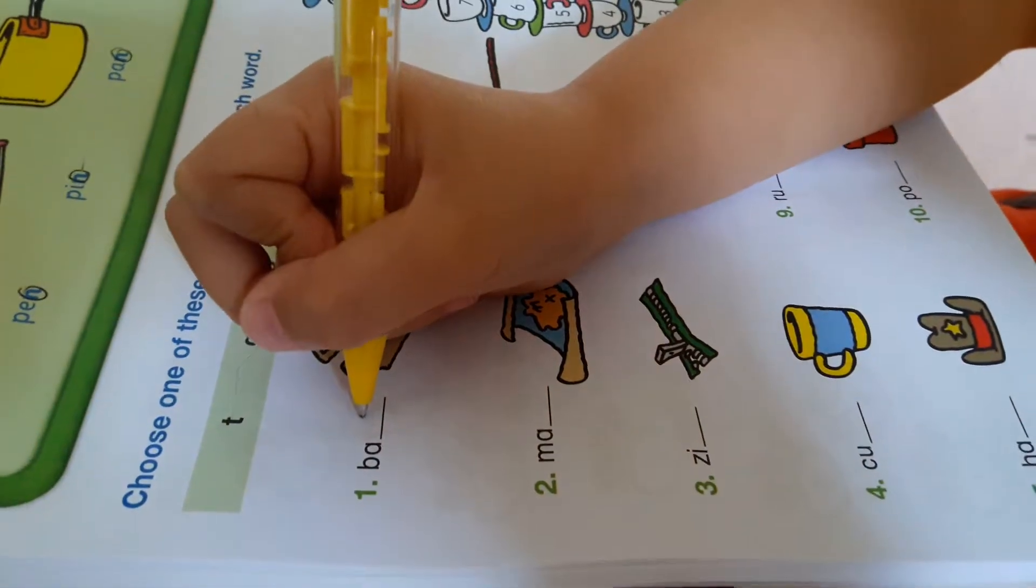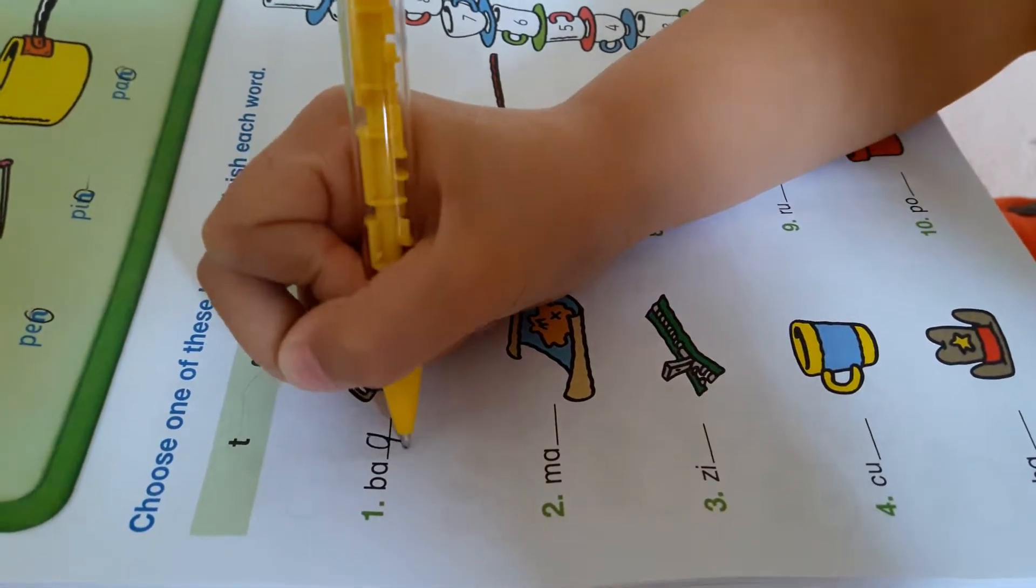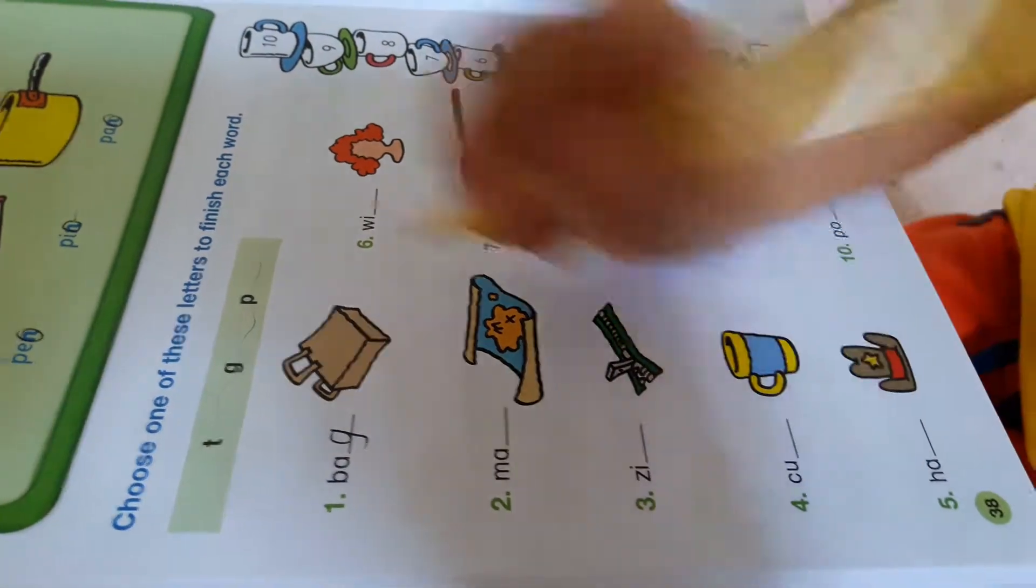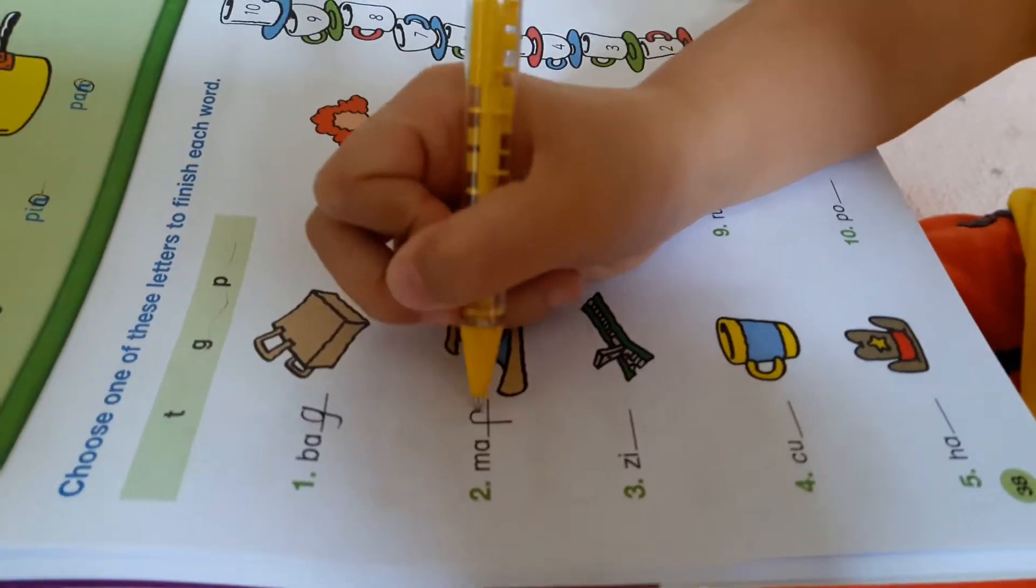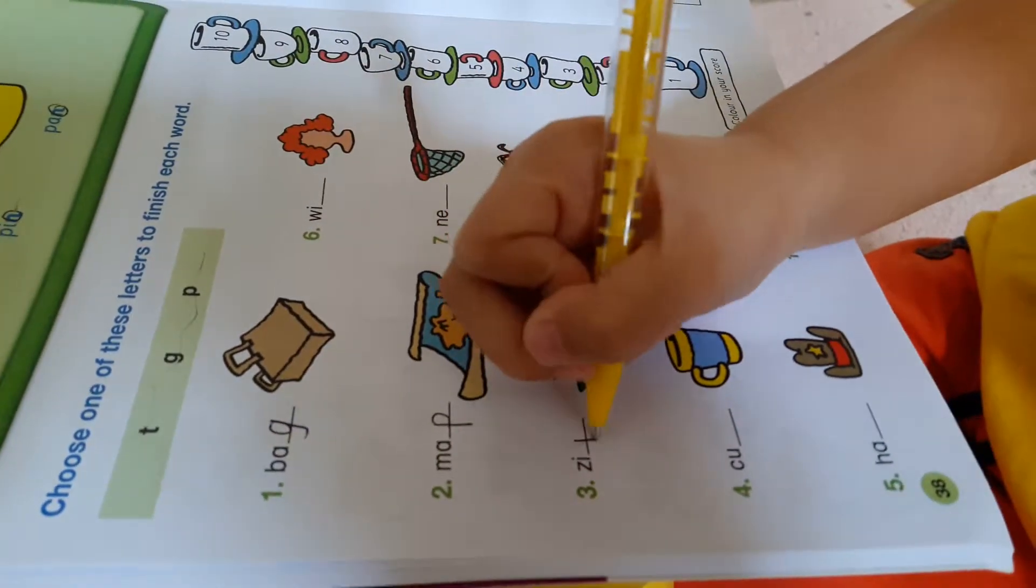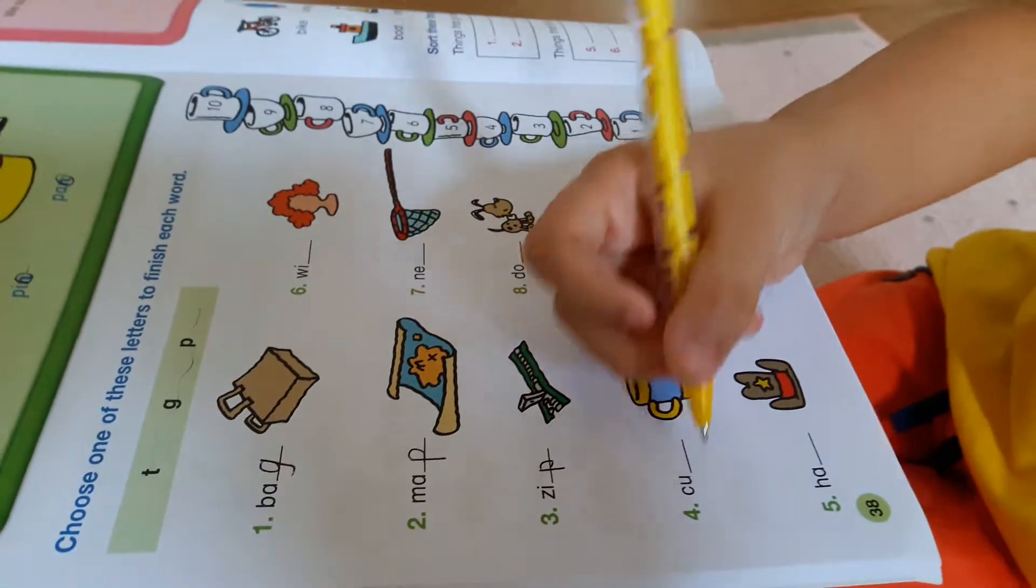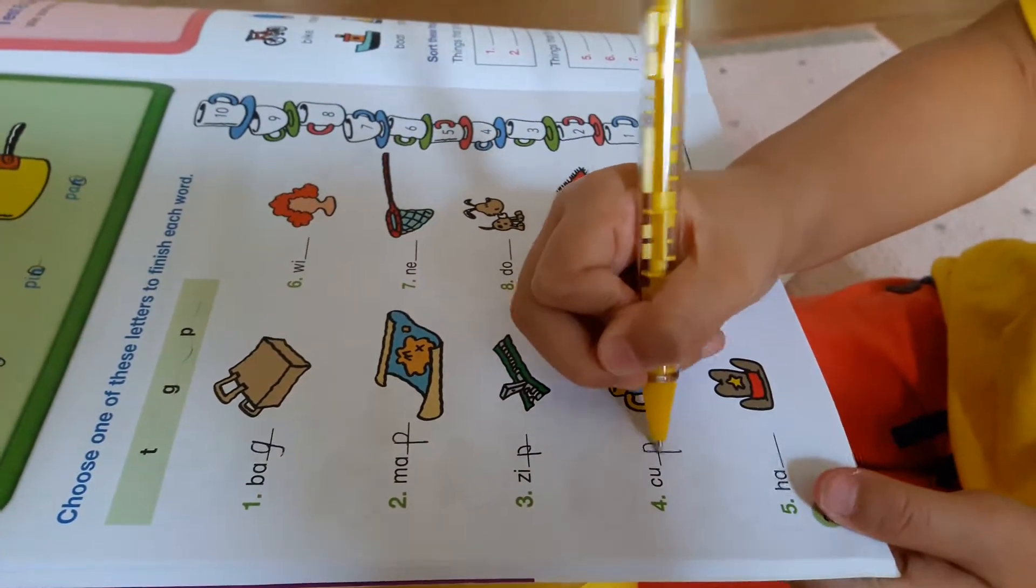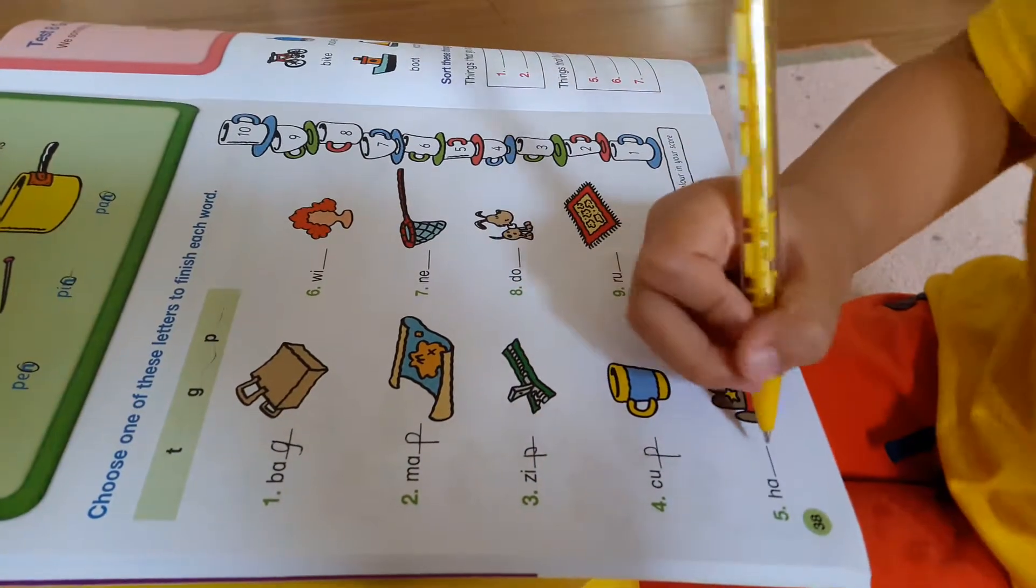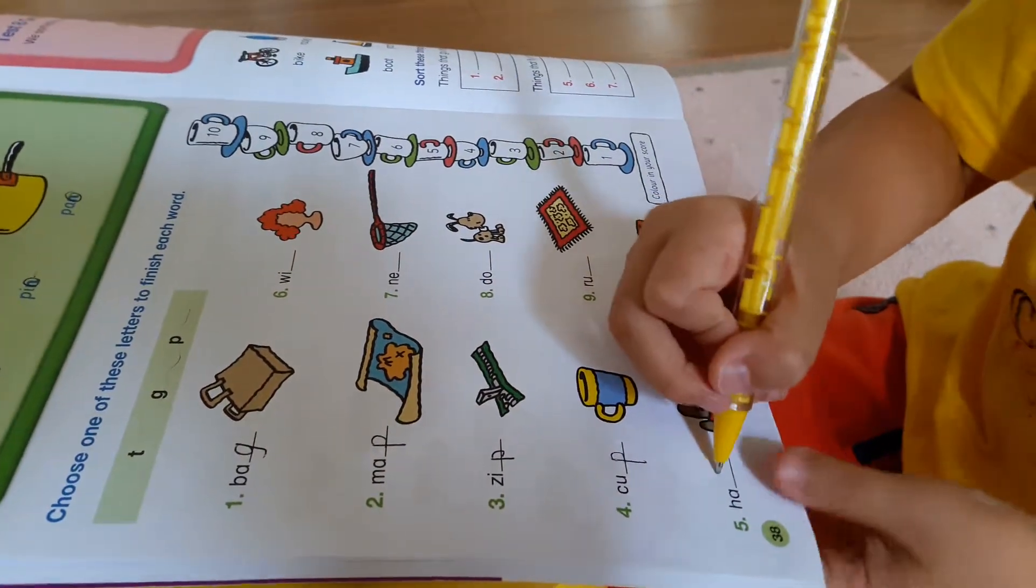This is a bag. This is a map. This is a zip. This is a cup. Most of them are P's, but I don't care. This is a hat.